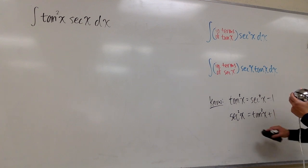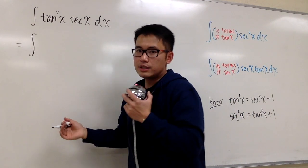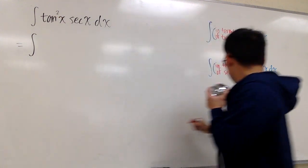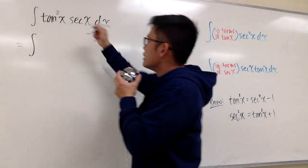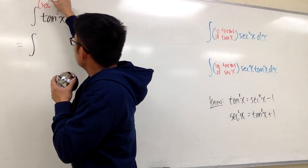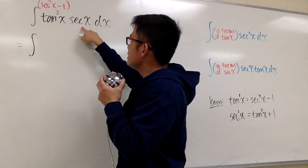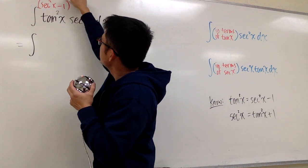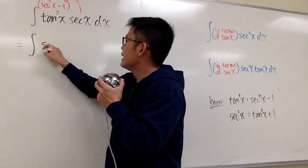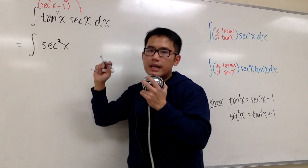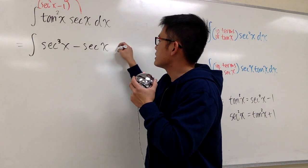This is a special case. We know that tangent squared x is the same as secant squared x minus 1. I'll do the replacement: secant squared x minus 1, then multiply by secant x — distribute it. Secant x times secant squared x gives secant to the third power x. And secant x times minus 1 gives minus secant x dx.